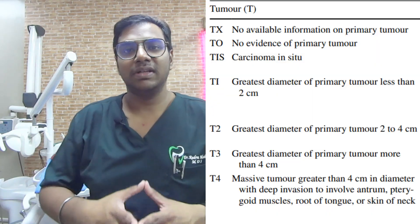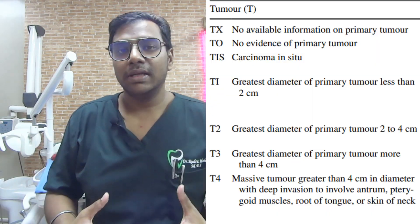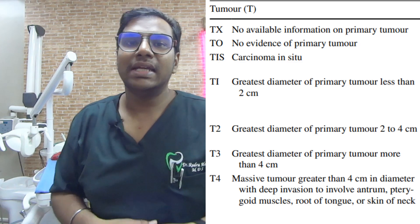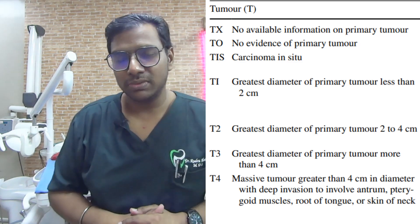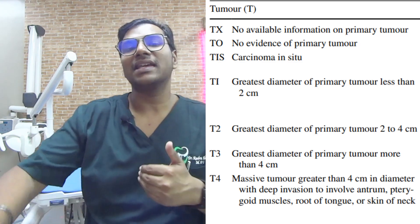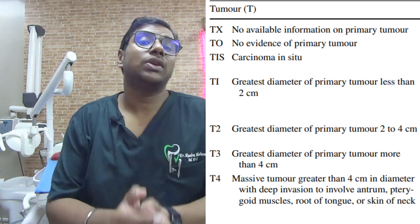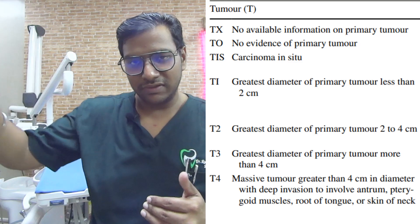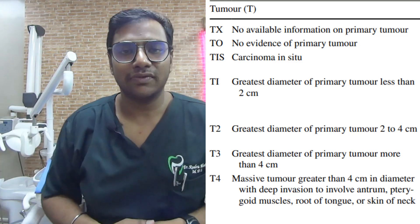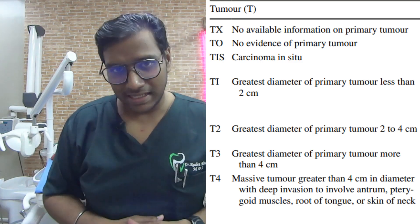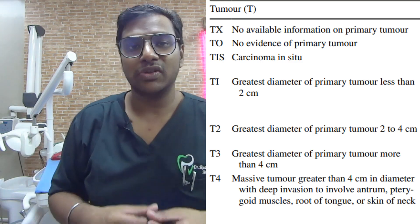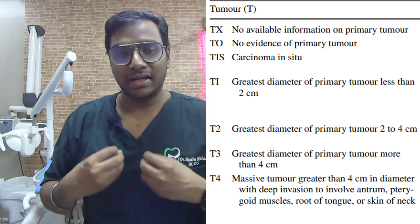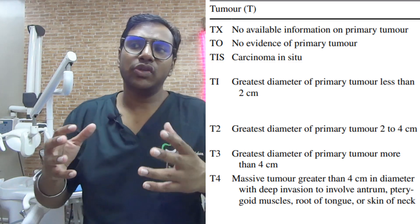Coming to tumor staging: TX means there is not enough information to classify the tumor. T0 means there is no evidence of a primary tumor. T1, T2, T3, and T4 represent increasing size and severity of the tumor. You also have TIS — tumor in situ, or carcinoma in situ — which means there is a definite presence of a tumor with aggressive neoplastic cells that may or may not be infiltrating into other tissues.